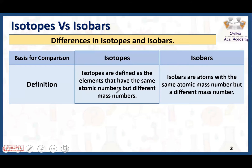Now what are isobars? Isobars are atoms with the same atomic mass number but a different atomic number. In the case of isobars, we are not considering one element — we are considering many elements. Different elements in the periodic table have the same mass number but their atomic number is different. When the mass number is same but atomic number is different, these are isobars.